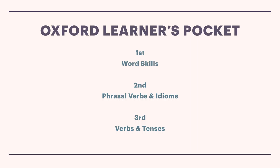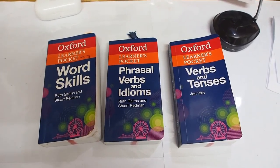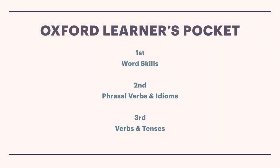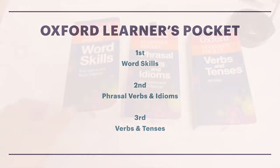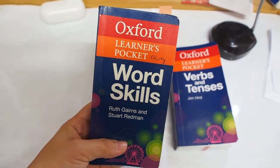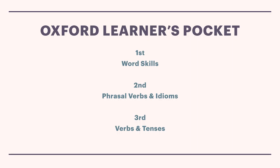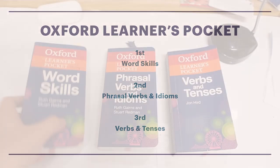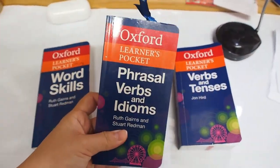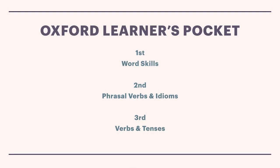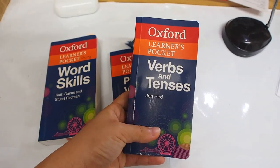Before I end this video, there are some English learning books I want to recommend. They are the Oxford Learner's Pocket Series. The first one is Word Skills, which covers vocabulary in different categories and fields of study — from home, school, the human body, to work, and so on. The second is Phrasal Verbs and Idioms, covering phrases in different daily life categories. The third is Verbs and Tenses, focusing on verb usage and all tenses.